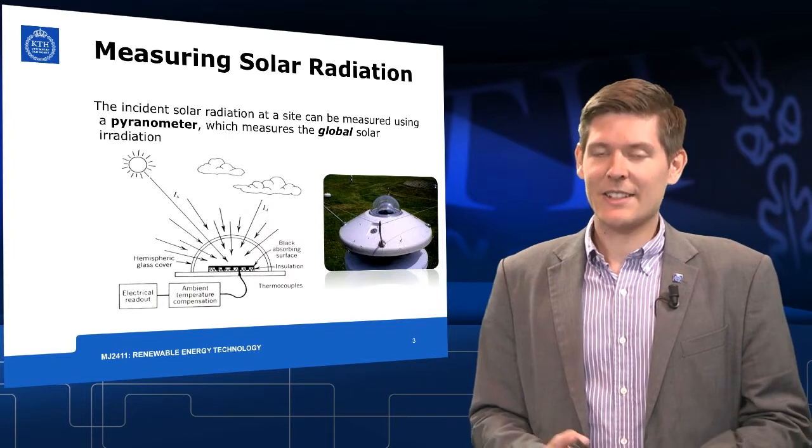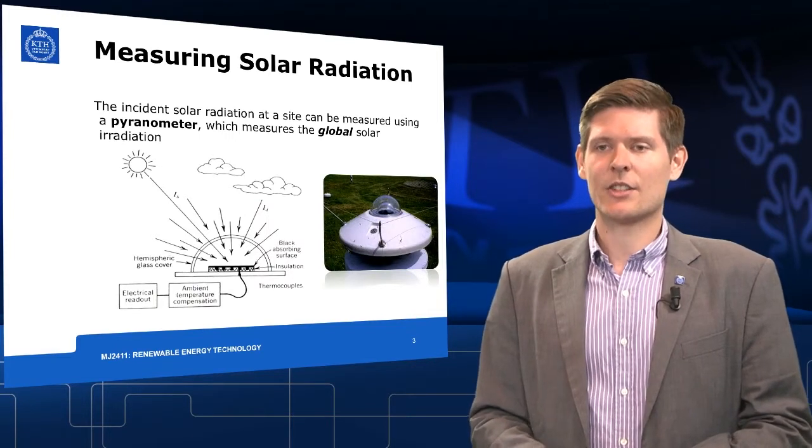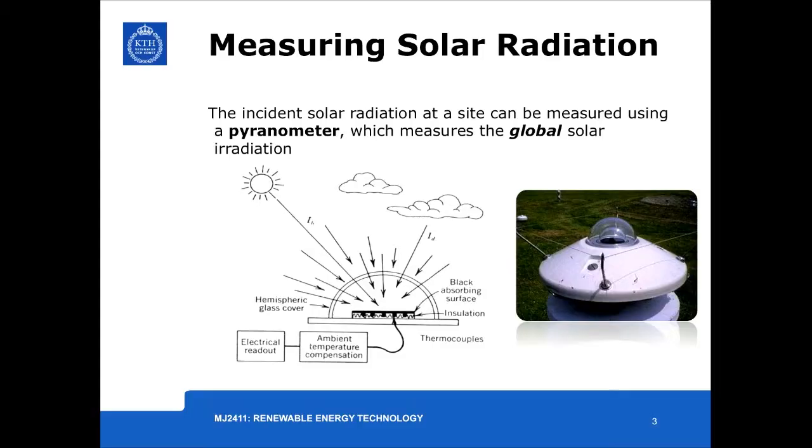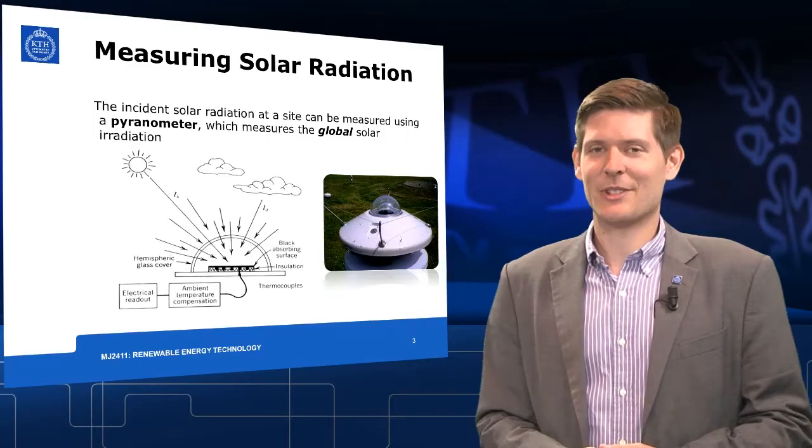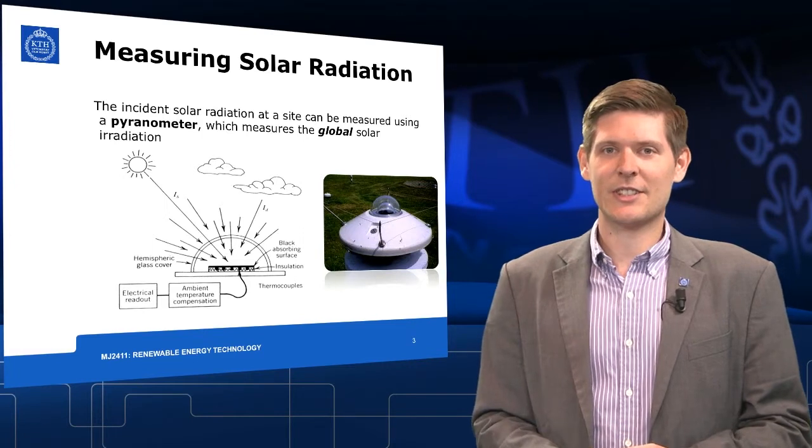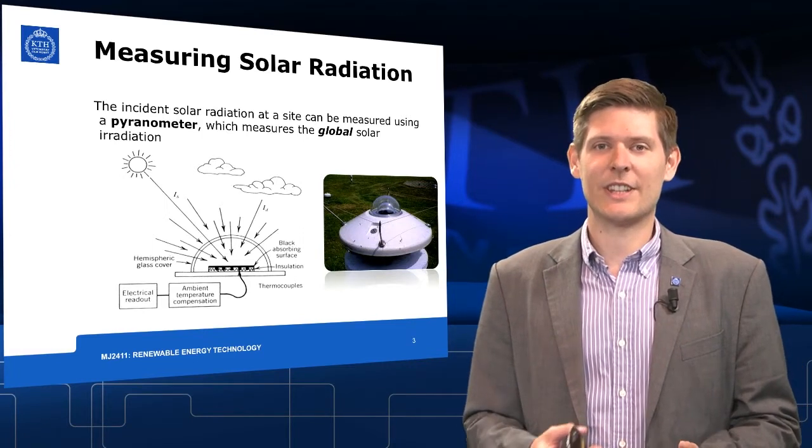A device which is able to measure the incident radiation, the total or global incident radiation is the pyranometer. Within this device, an absorbing surface is shielded from heat losses and connected to thermocouples. Depending on the incident flux, the temperature which is reached at the surface is proportional to the incident flux.